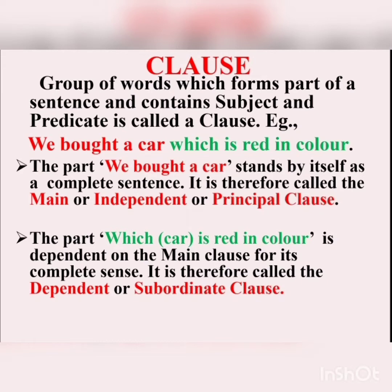A clause can be classified into two major types: the main clause and the subordinate clause. A main clause can also be called an independent clause or principal clause because it stands by itself as a complete sentence. For example, 'we bought a car' — it has a subject and predicate of its own. On the other hand, the part of the sentence highlighted in red is dependent on the main clause for its complete meaning. Hence, it is called a dependent clause or subordinate clause.